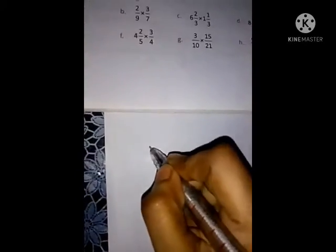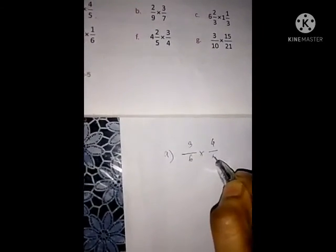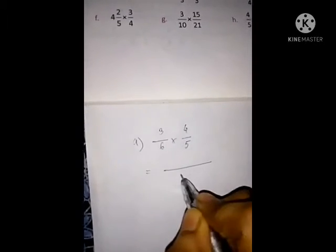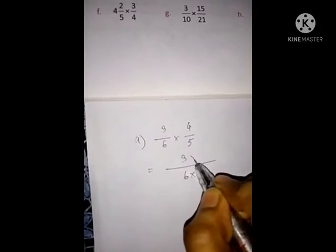See, this is example A. 3 by 6 into 4 by 5. Just write 6 into 1. Sorry, 6 into 5, 3 into 4.